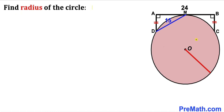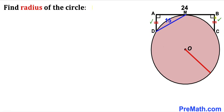Welcome to PreMath. In this video we have this circle with center O along with a tangent line AB, where the tangent AB length is 24 units and M is the point of tangency. Segment AD equals segment BC and both are perpendicular to the tangent line. The chord DM length is 15 units. Our task is to calculate the radius of this circle — let me label it as lowercase r.